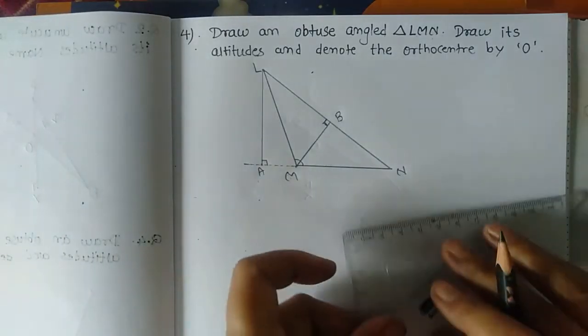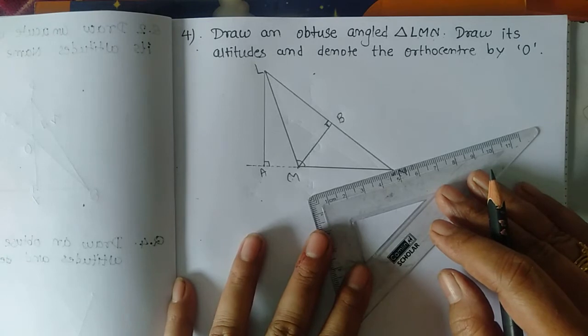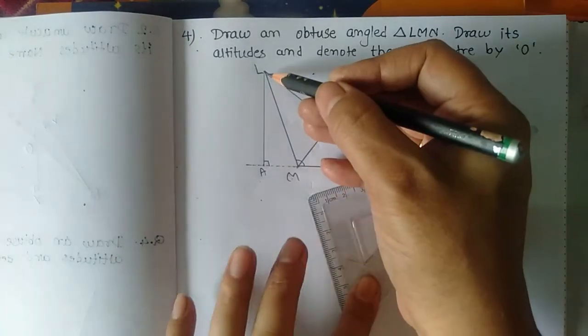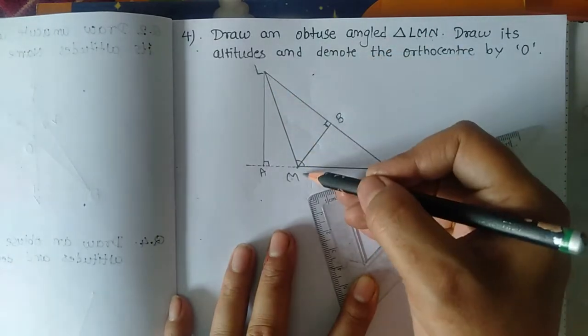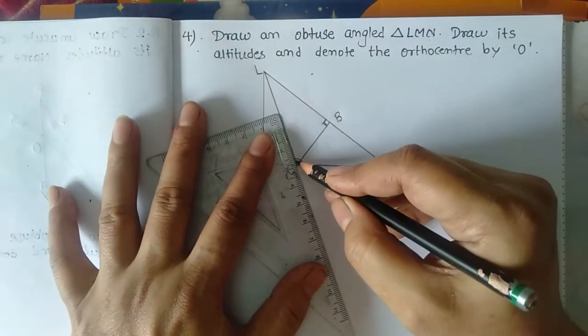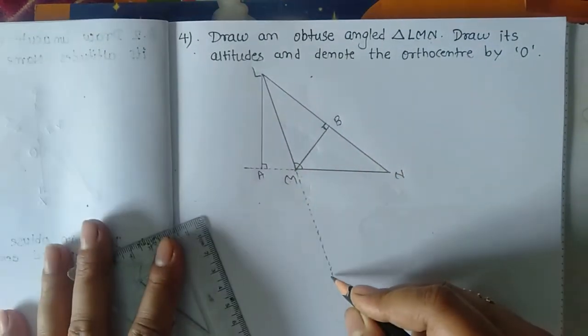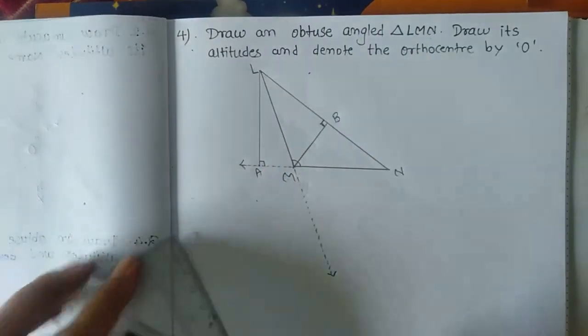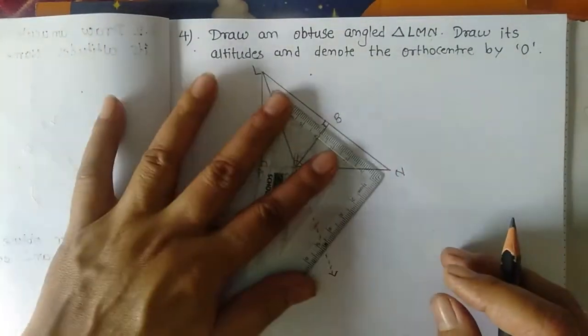Now the altitude from vertex N. To draw the altitude from N, the length of side LM is too short, so first we extend side LM. Now draw the altitude.